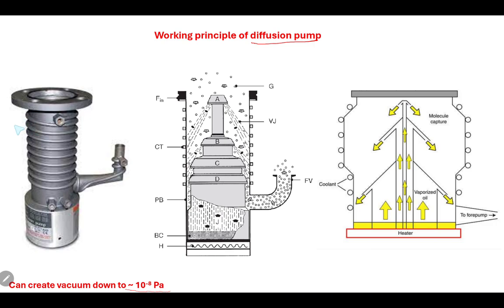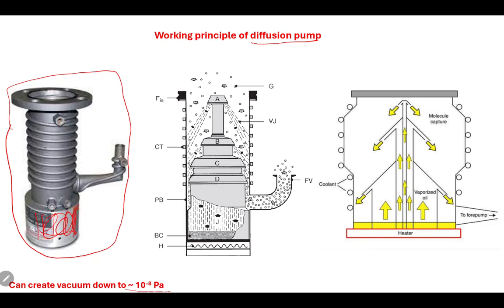This is the physical picture of the diffusion pump. You can see at the lower part there is a heater and the fluid which the heater will heat up. The middle cylindrical part has different vacuum stages. The top part is connected to the chamber which you want to evacuate, and there is one opening which is connected to the fore pump.